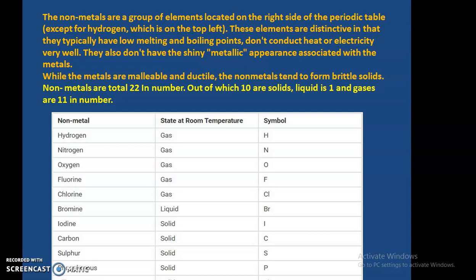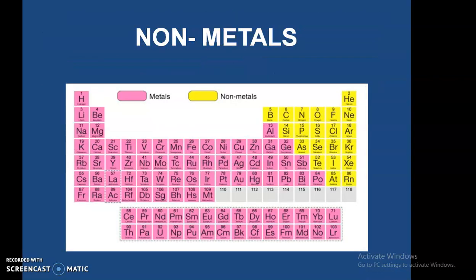Here are some examples of non-metals and their states at room temperature. Hydrogen (H), nitrogen, oxygen, and fluorine are gases. Bromine is the only liquid non-metal. Iodine, carbon, sulfur, phosphorus, and silicon are solids. On the periodic table, all the highlighted yellow elements including hydrogen are non-metals.